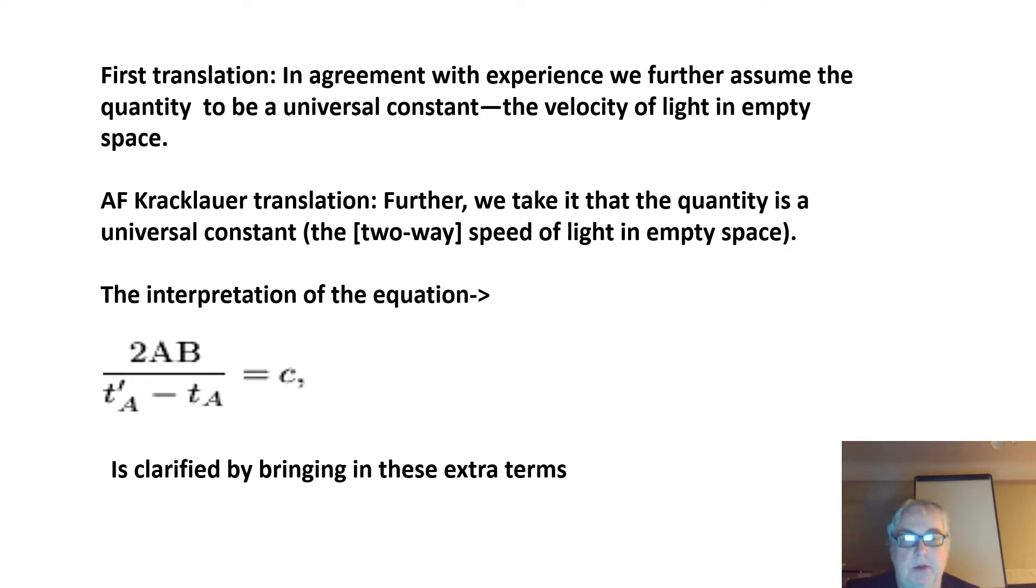Comparing the two translations: the first says 'in agreement with experience we further assume the quantity to be a universal constant—the velocity of light in empty space.' But the second says 'further we take it that the quantity is the universal constant—the two-way speed of light in empty space.' Putting aside the issue of velocity versus speed, he's talking about two-way light speed, as opposed to what the usual translation is saying.